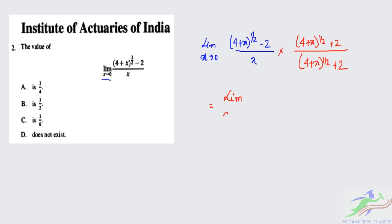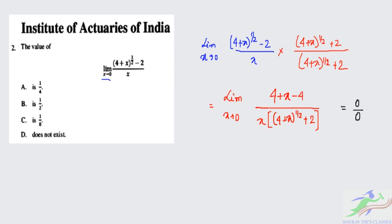We can write this limit as x tends to 0: the numerator becomes (4 + x) - 4 = x, divided by x multiplied by (√(4 + x) + 2). If we put the value of the limit directly, we find it is a 0/0 form, so we know we have to apply L'Hôpital's rule.